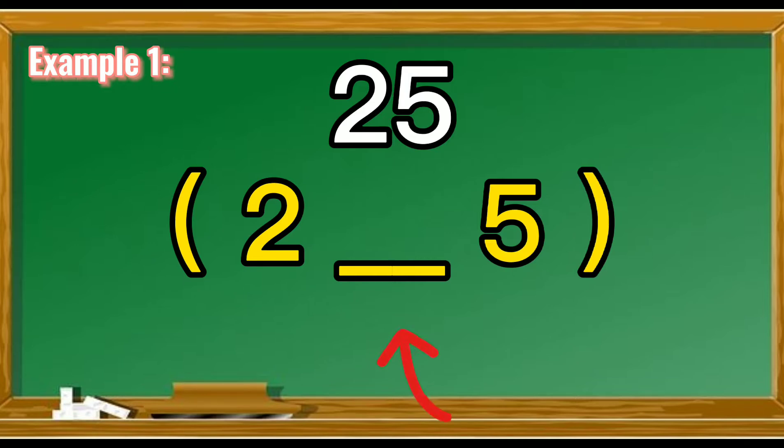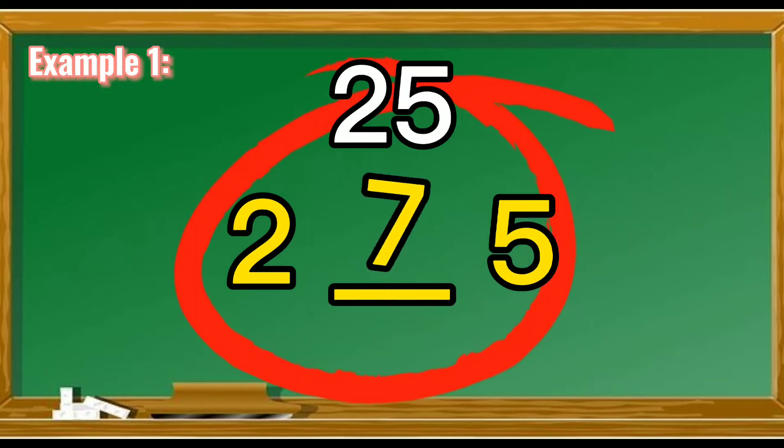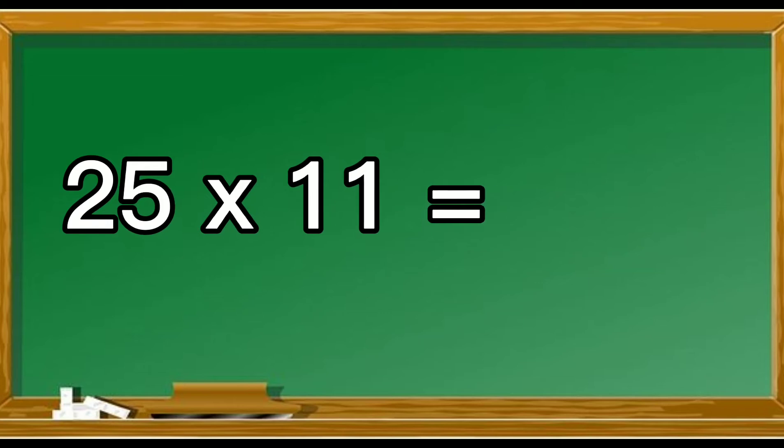To multiply any two-digit number by 11, simply add the digits of the number together and put the sum between the original two digits. That's the answer. So 25 times 11 is 275.